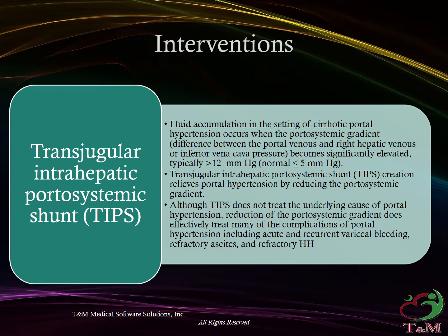Interventions – Transjugular intrahepatic portosystemic shunt (TIPS): Fluid accumulation in the setting of cirrhotic portal hypertension occurs when the portosystemic gradient difference between the portal venous and right hepatic venous or inferior vena cava pressure becomes significantly elevated, typically greater than 12 mmHg. Normal is less than or equal to 5 mmHg.